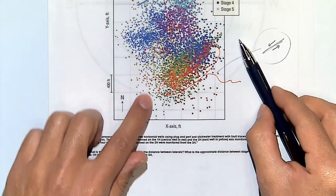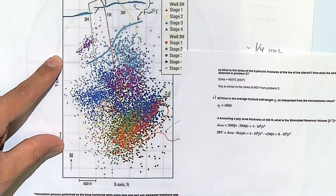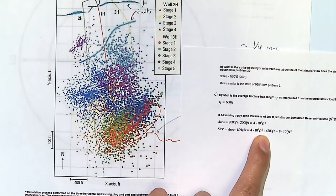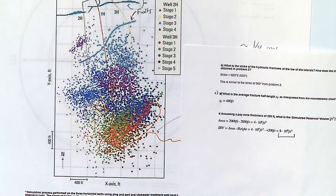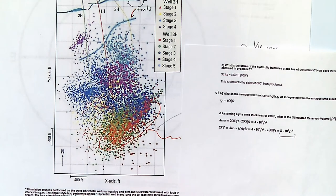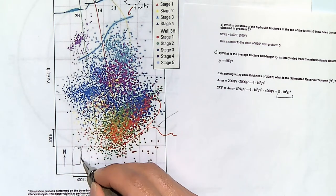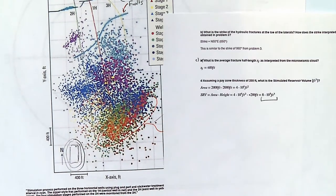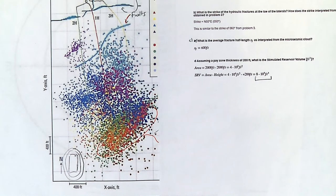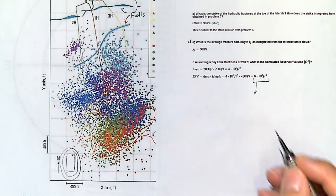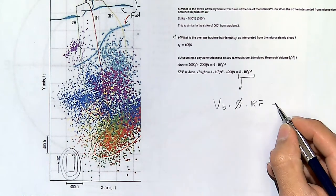The total stimulated reservoir volume is about 5 by 5 squares — roughly 2,000 by 2,000 feet — times a height of about 200 feet. That's a pretty large volume. Each of those squares is about two football fields. The stimulation covers about 5 times 5 of those areas.